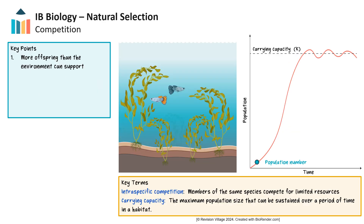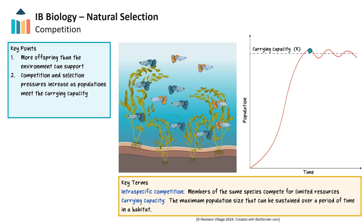The second requirement for natural selection to occur is competition. Typically, species produce more offspring than the environment can support. Competition increases and selection pressures become stronger as populations reach or exceed their carrying capacity. Because members of the same populations occupy the same niche, they may be competing for the same resources or escaping from the same predators. This competition within species members is called intraspecific competition.